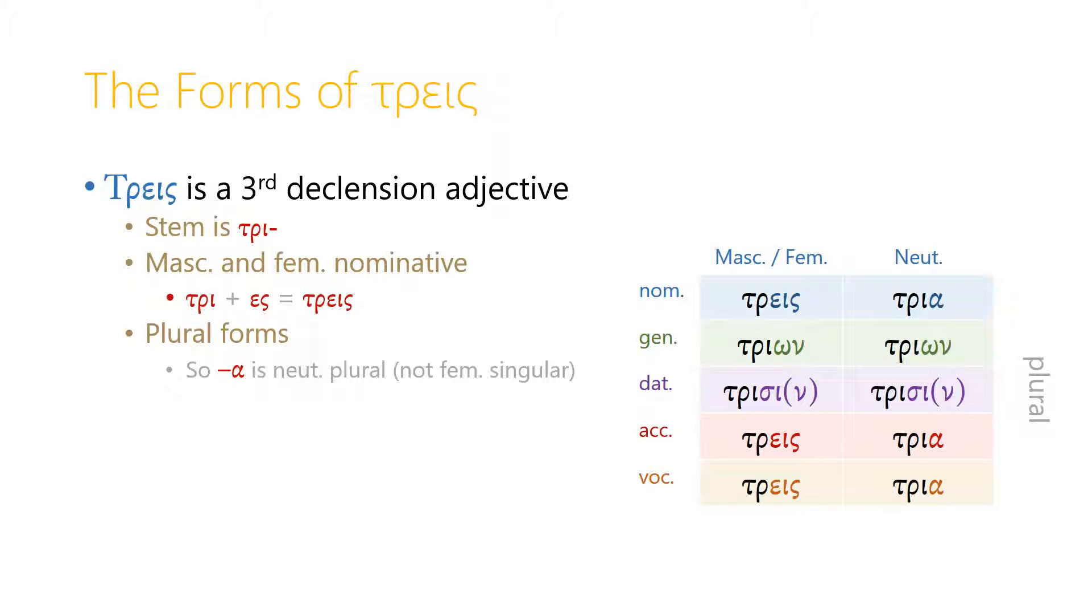But the rest of the masculine and feminine forms are totally regular. Trione, trisi, trace, and trace again in the vocative. It looks very much like a polis-type third declension noun.